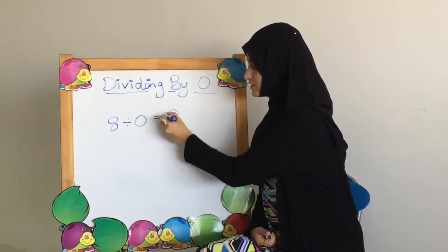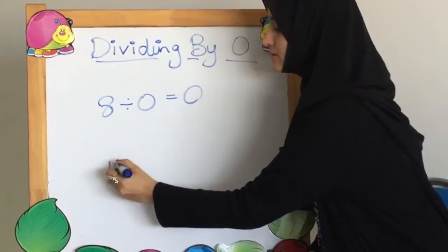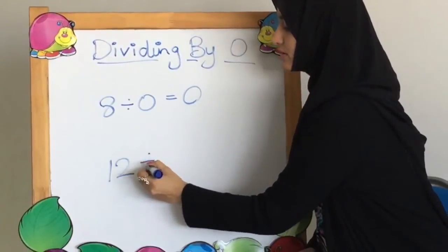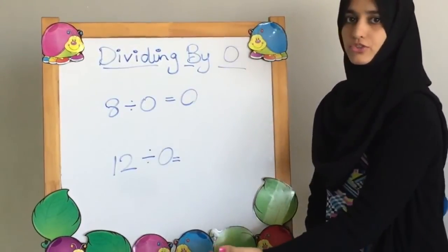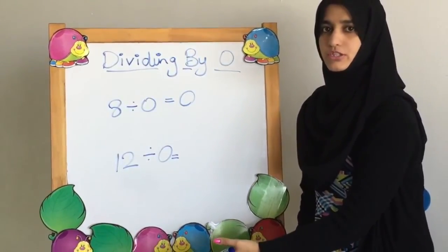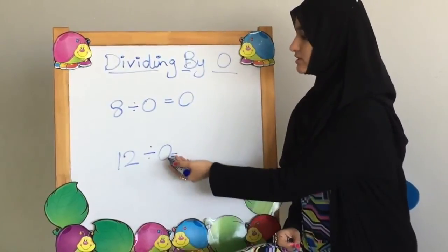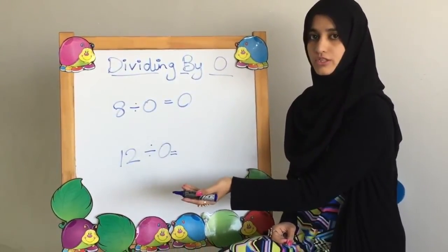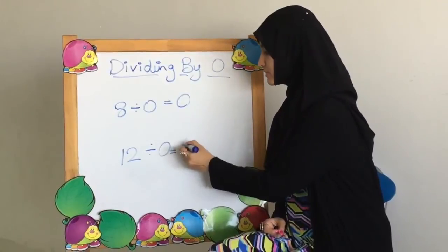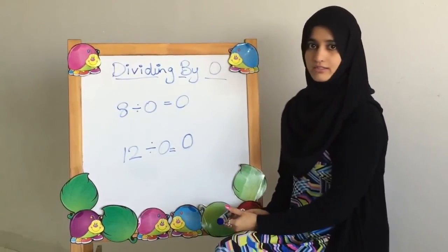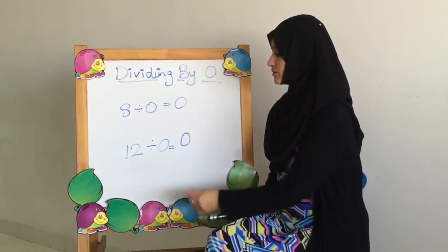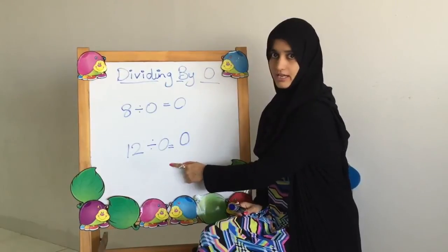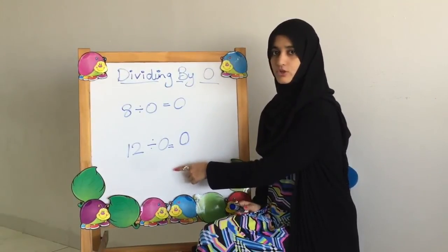So the answer is 0 as well. If we take an example: we have 12 balloons and we have to distribute them among 0 children. How many balloons did the children get? Since there were 0 children, they got 0 balloons. So the answer is 0. Whenever in math a number is divided by 0, the answer is always 0, because we make 0 sets and the set size is also 0.